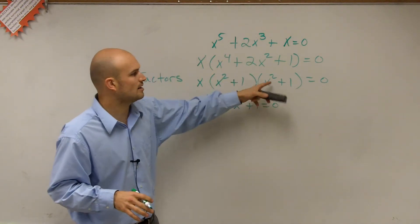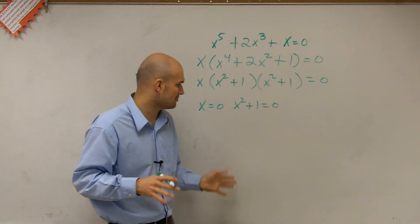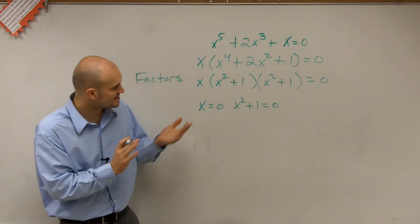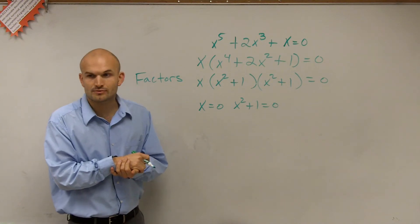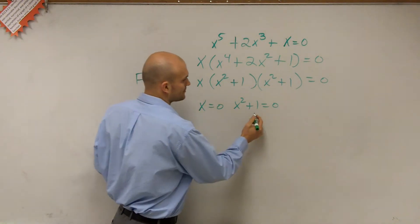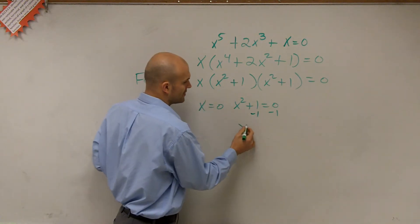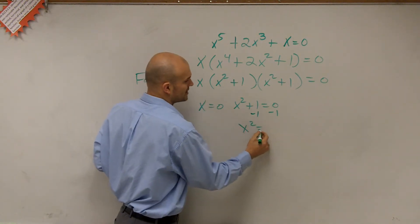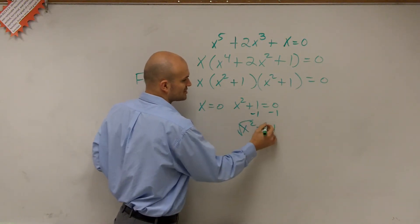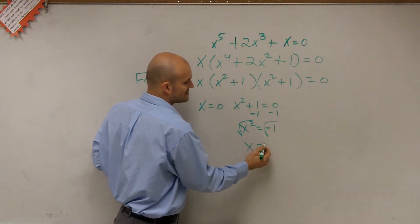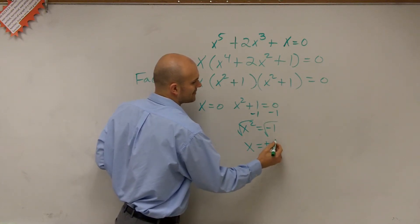We're going to learn more about what happens when we have factors that look like that form. But for right now, we just have x equals zero, and then we have x squared plus 1 equals zero. To solve, subtract 1, and therefore you have x squared equals negative 1. Then we take the square root, and therefore you have x equals plus or minus i.